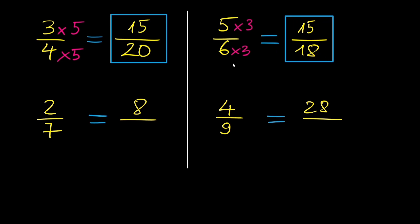Now for the next example, we are missing the bottom number. 8 divided by 2 is 4. So to get 8 from 2, we got to multiply by 4, which means we need to multiply the denominator by 4 as well. 7 times 4 is 28. So 2 over 7 is equivalent to 8 over 28.